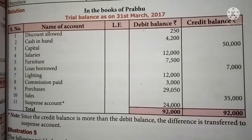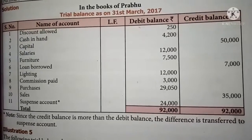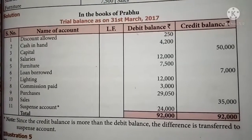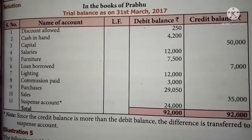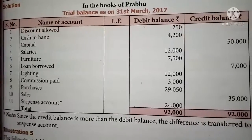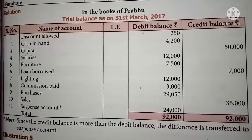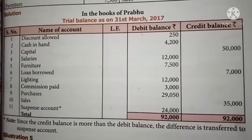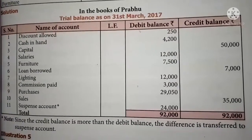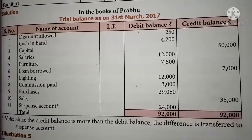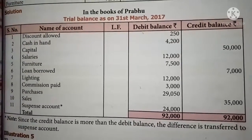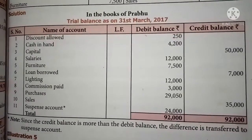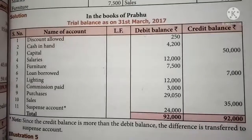That balance of 24,000 will be written as suspense account. Because the debit column is the lesser amount, you write the difference amount in the lesser column. In the given sum they are already asking to find the difference and write it as suspense account — this amount will be transferred to suspense account and the trial balance will be tallied.